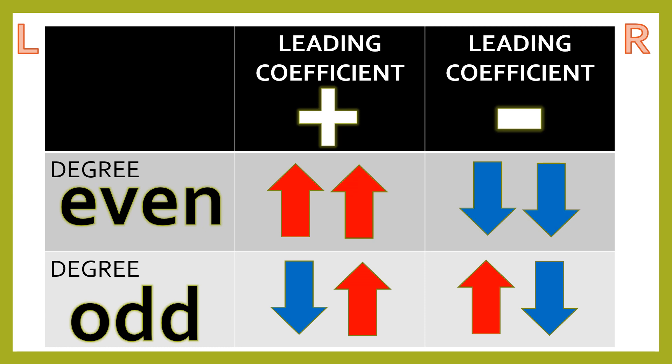Now, if your leading coefficient is positive, and its degree is 3, or 5, or 7, or 9, odd numbers. The direction is that on the left side it falls, but on the right side it rises.